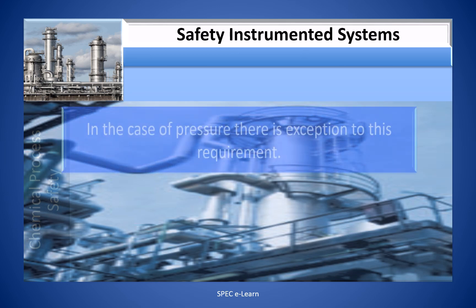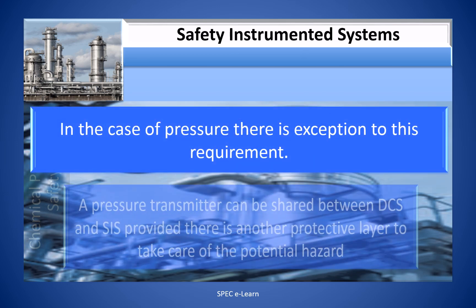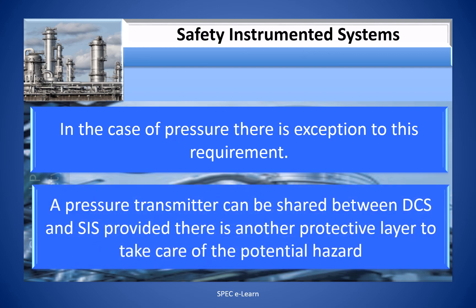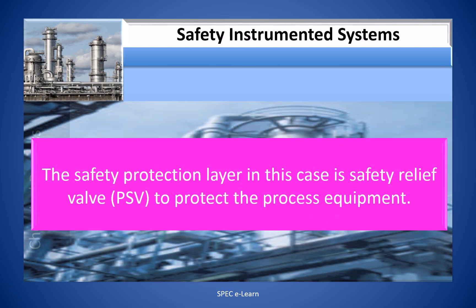In the case of pressure, there is an exception to this requirement. A pressure transmitter can be shared between DCS and SIS provided there is another protective layer to take care of the potential hazard. The safety protection layer in this case is a safety relief valve or PSV to protect the process equipment.